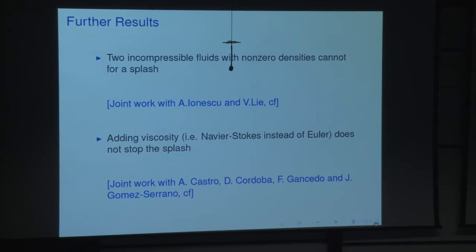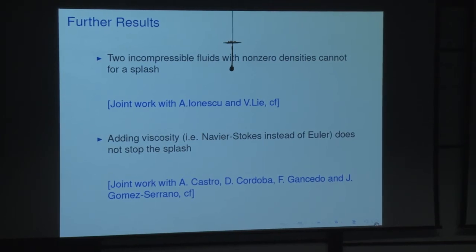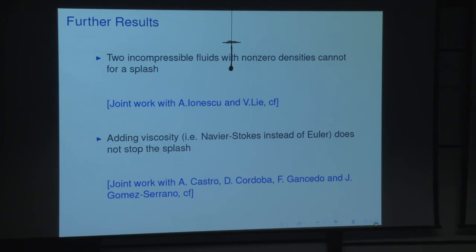Adding viscosity — that is, Navier-Stokes instead of Euler, changing the equation inside the fluid and also the boundary conditions to Stokes boundary conditions — does not stop the splash. That's physically clear. Mathematically it's something of a mess, but if one is willing to face technical difficulties, it works.